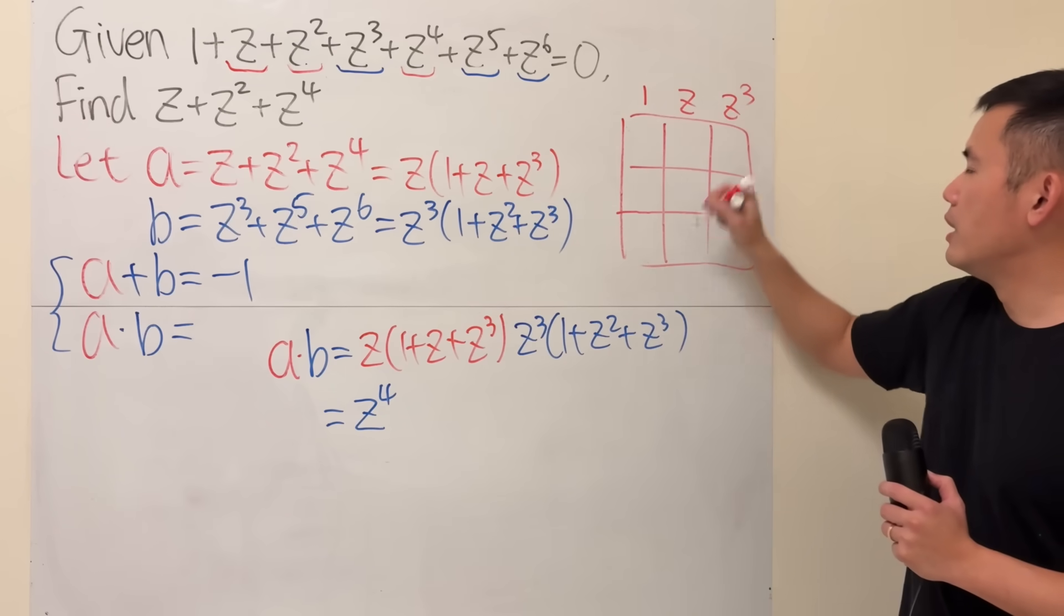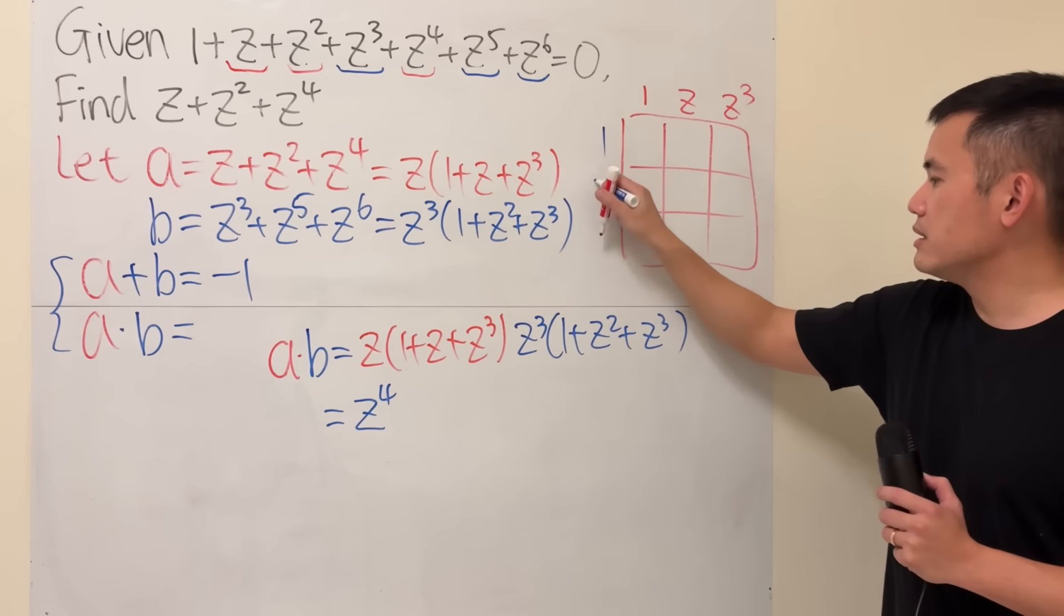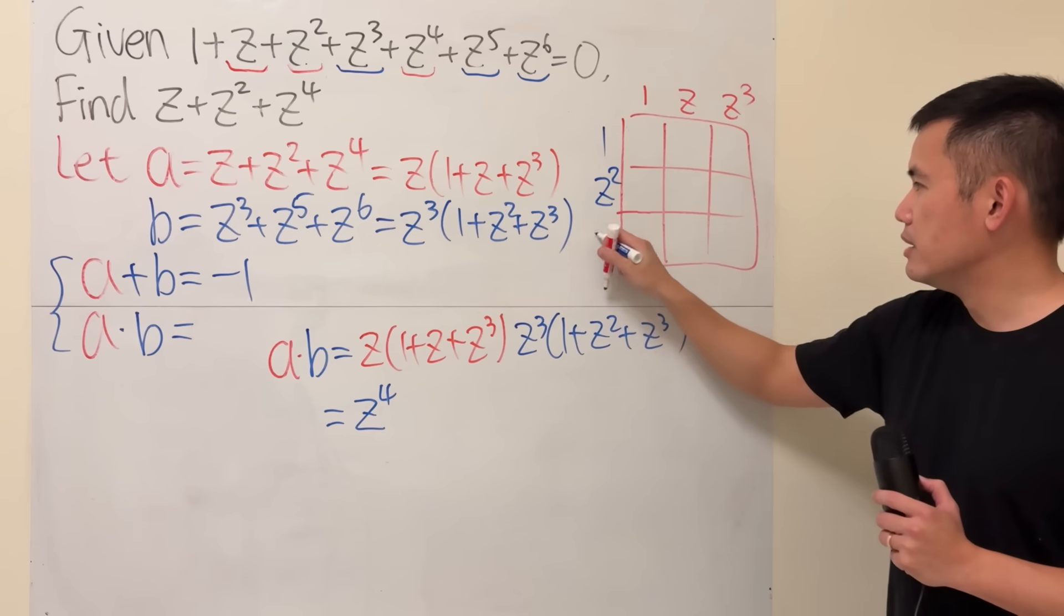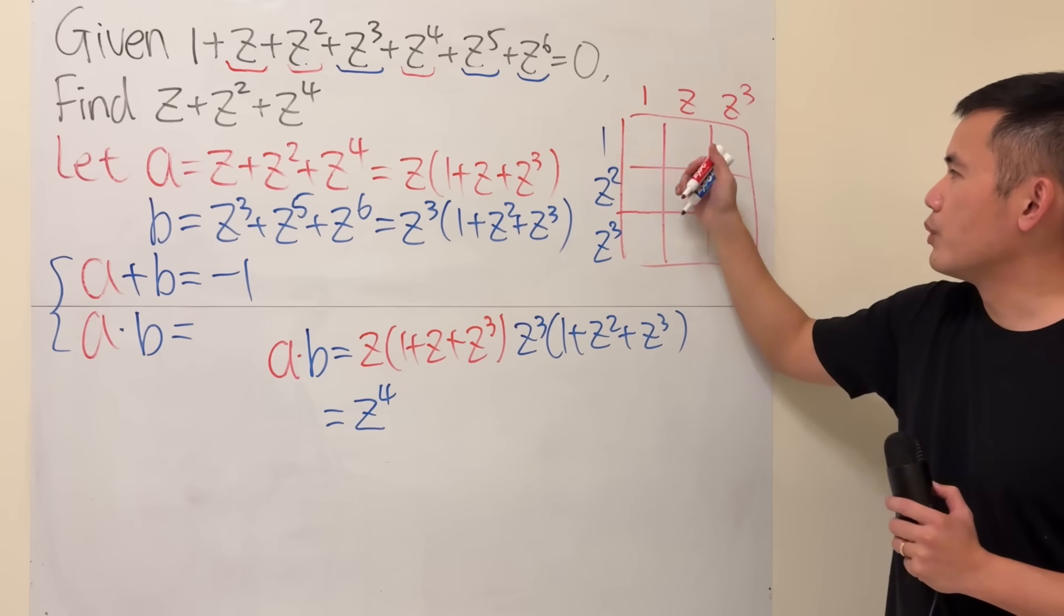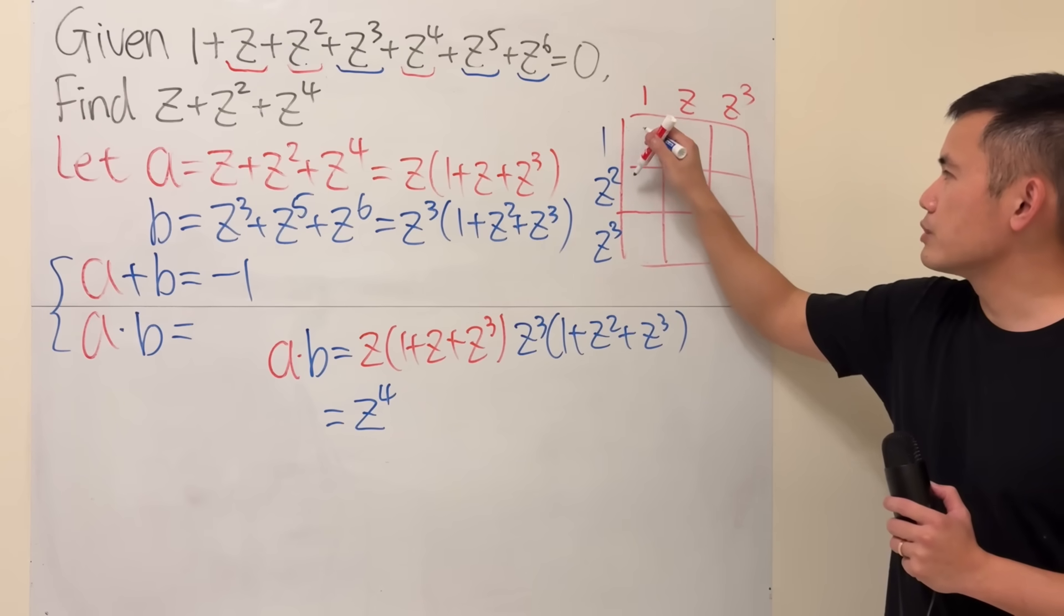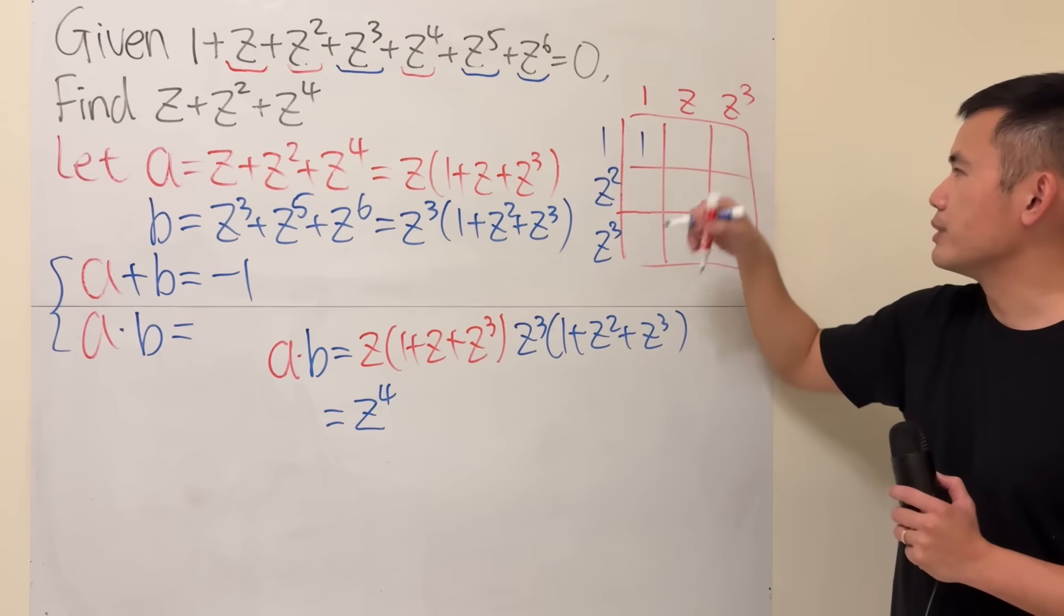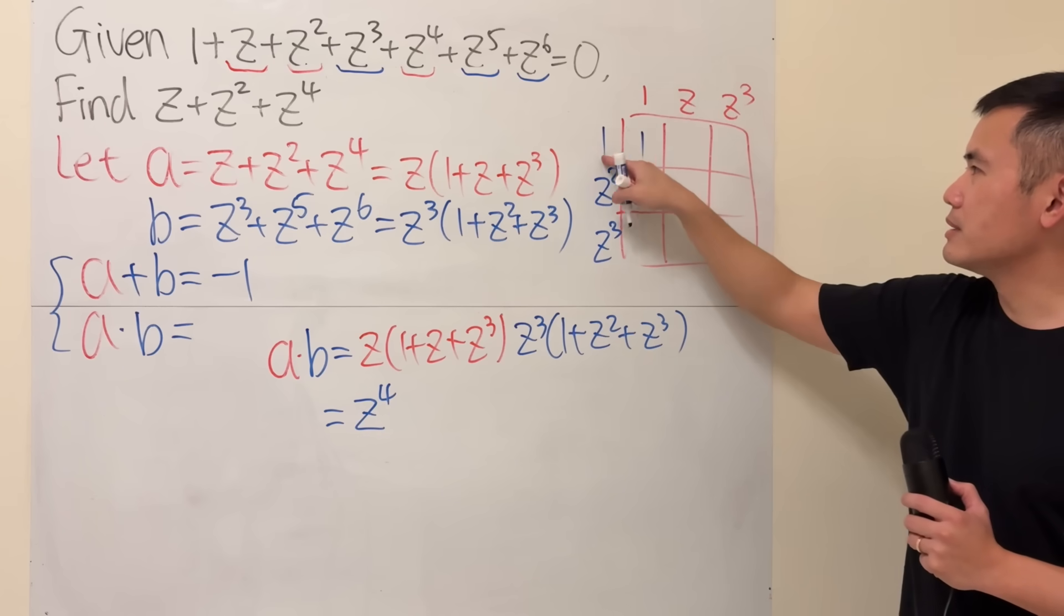On the top, I'm going to put on these: 1, z, and z cubed. On the side here, 1, z squared, and z cubed. Now, check this out. This box means we do 1 times 1, which is 1.